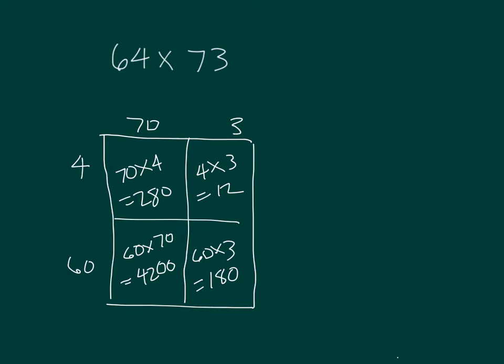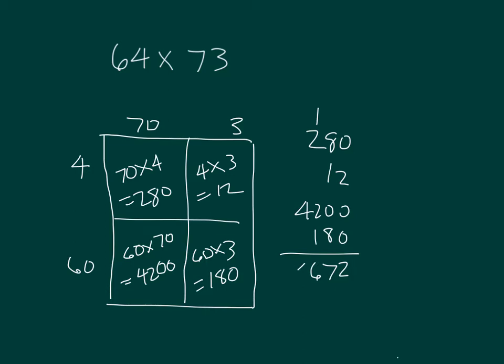To figure out the product, we add these partial products together: 280 plus 12 plus 4,200 plus 180, giving us 4,672.